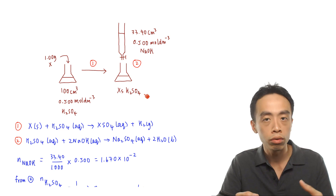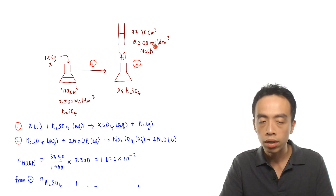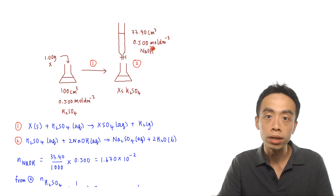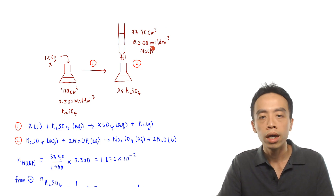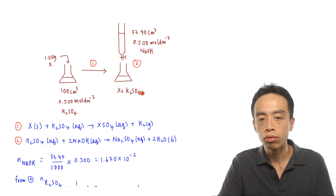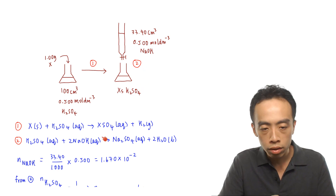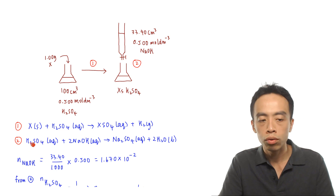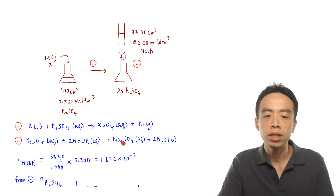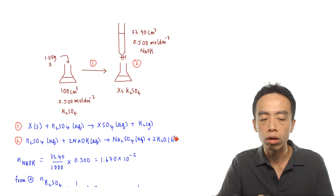The amount of NaOH required is 33.40 cm³ at 0.5 mol per dm³. The reaction between sodium hydroxide and H₂SO₄ — the second reaction — has the balanced equation: H₂SO₄ + 2NaOH → Na₂SO₄ + 2H₂O.